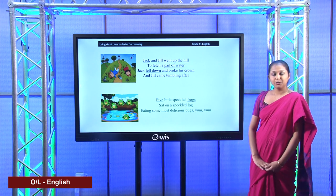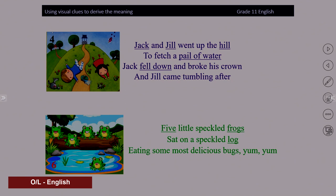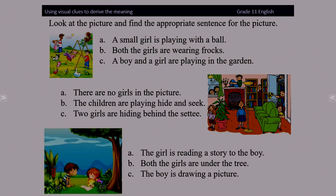Now I am going to take you to another activity. Here I have given three pictures in this slide. In front of each picture, you have three sentences. Let's read the instructions first: look at the picture and find the appropriate sentence for the picture. You have to read these three sentences and find the most appropriate sentence for each picture. Observe these three pictures and write your answers in your exercise book.